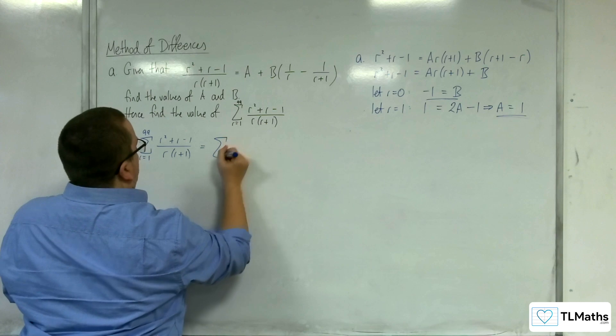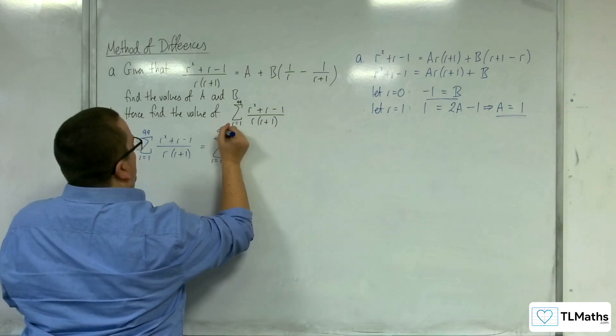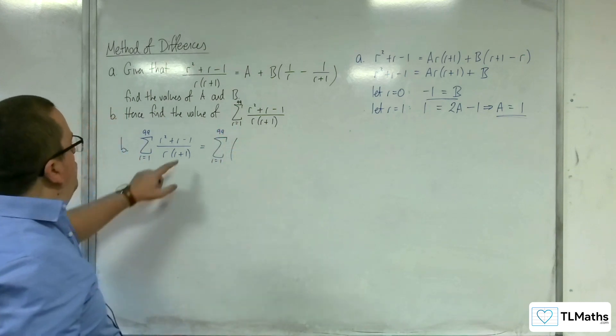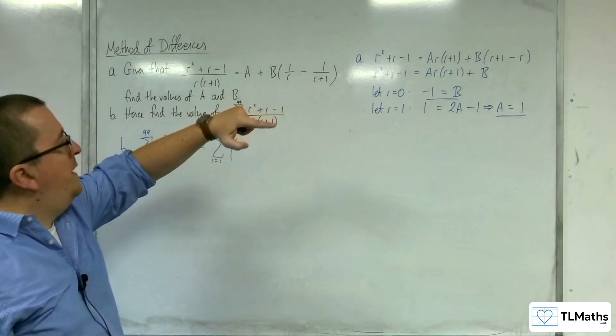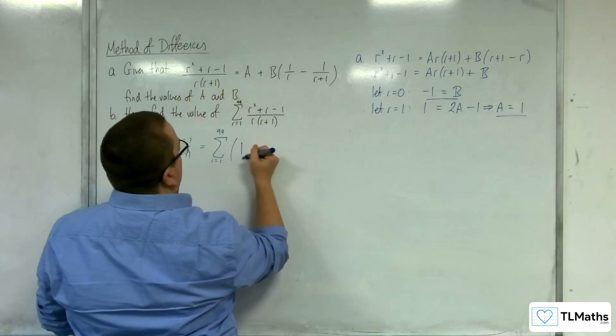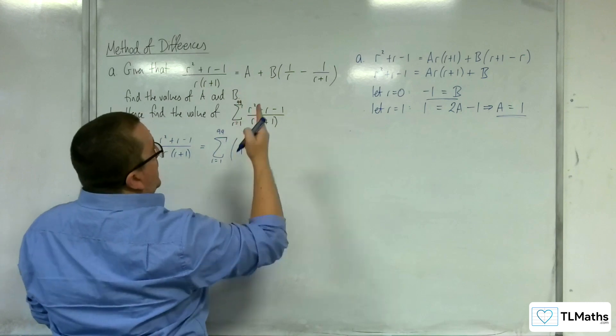Right. So that's the summation from r is 1 to 99. We've rewritten this in that form. So let's substitute that in. So we've got the 1 for a, then the b is minus 1.